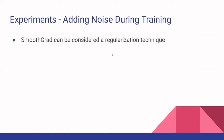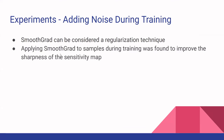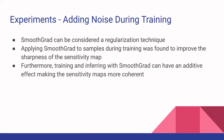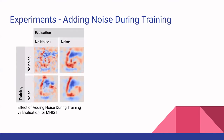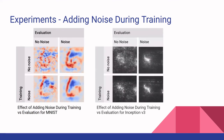Another method they explored was applying SmoothGrad during model training rather than just evaluation. They applied it to samples during both training and evaluation. They found it improves the sensitivity map further, shown using the MNIST dataset with a confusion matrix comparing no noise, noise only for training, noise only for evaluation, and both. Adding noise for both training and evaluation further improves the sensitivity map. The same holds for ImageNet, where you can more coherently see the gazelle.